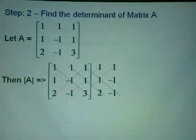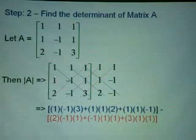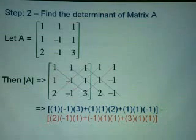And then draw the line, the blue lines and the red lines. The next step is to multiply all the elements on the blue line. So we have 1 times negative 1 times 3 here, plus 1 times 1 times 2, plus 1 times 1 times negative 1.